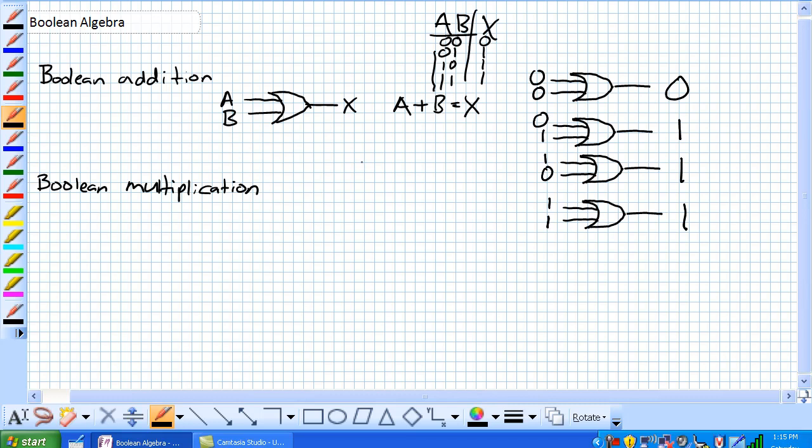Given a 3 input gate A, B, C, with output X, we could expect our Boolean equation to look like A OR B OR C is equal to X. Basically just highlighting the fact that Boolean addition is equivalent to our OR gate.